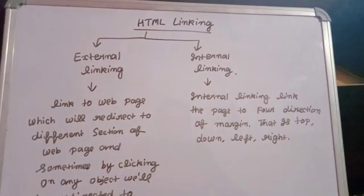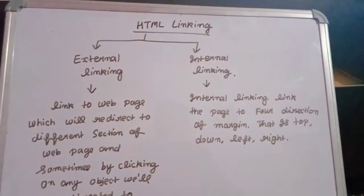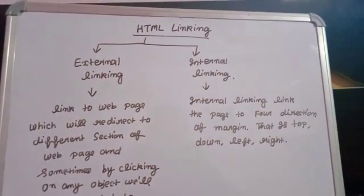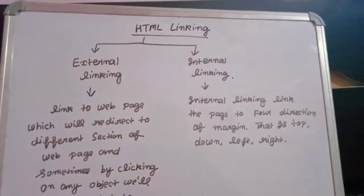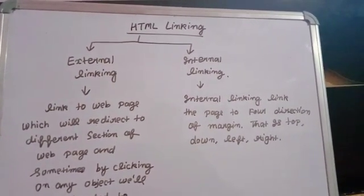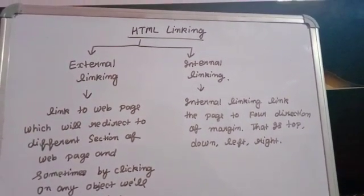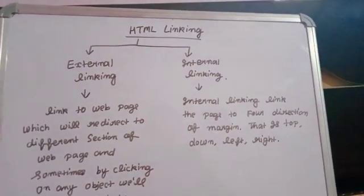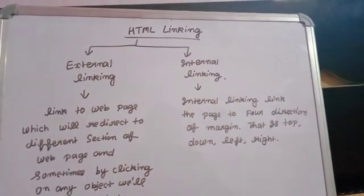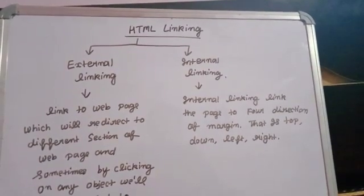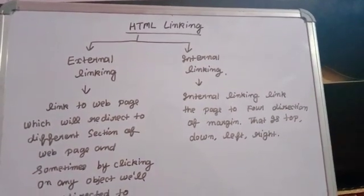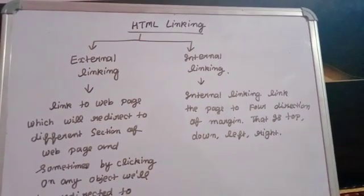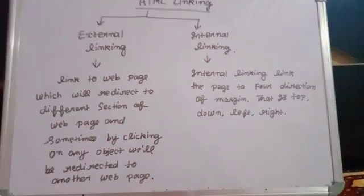In internal linking, as you have read before about the margin of HTML — margin is of four or five types: top, down, left, right, and center. So the work of internal linking is to link to these four directions of the margin, that is top, down, left, right, and center. So this is HTML linking.